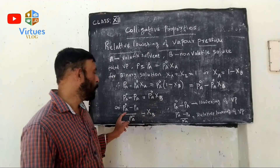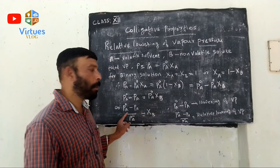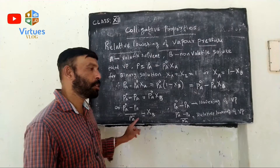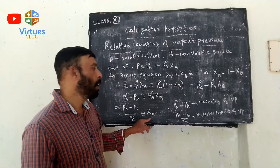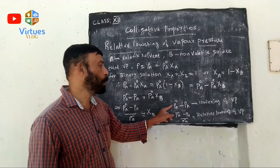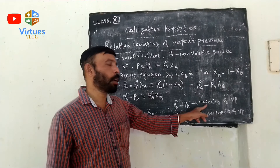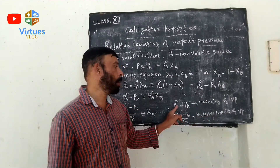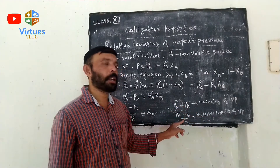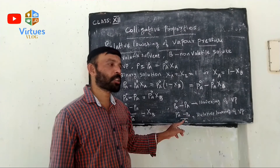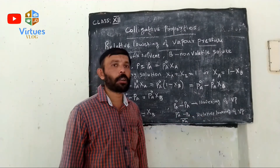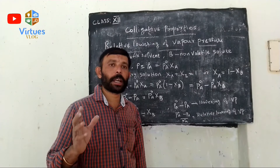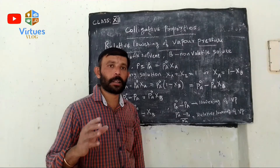Rearranging further, we get (P0A minus PA) divided by P0A equals chi B. Here, P0A minus PA is called the lowering of vapor pressure, and (P0A minus PA) divided by P0A is called the relative lowering of vapor pressure.